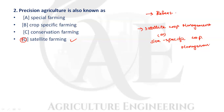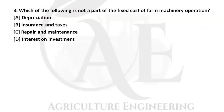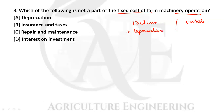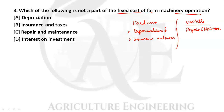Next question: which of the following is not a part of the fixed cost of farm machinery operation? There are two types of cost: fixed cost and variable cost. Depreciation, insurance, taxes, and interest on investment are all fixed costs. Repair and maintenance is a variable cost because it can vary. So option C is the correct answer.